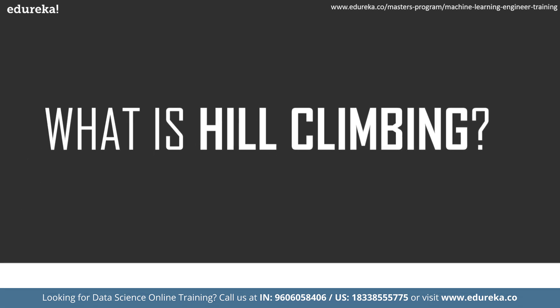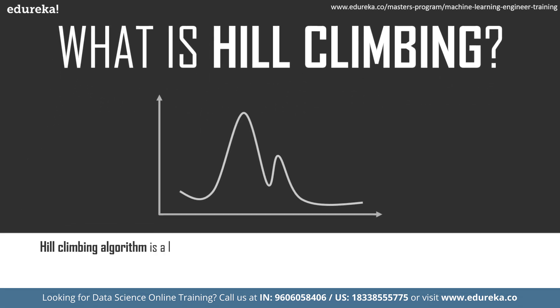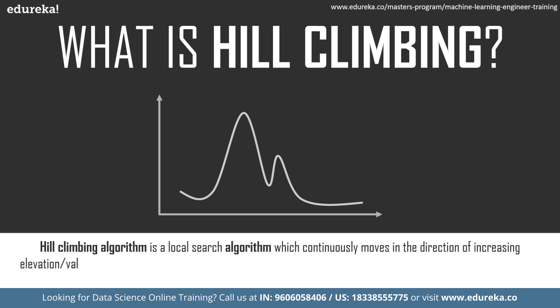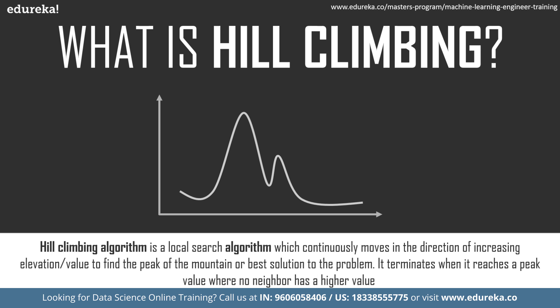Hill Climbing is a heuristic search used for mathematical optimization problems in the field of AI. Given a large set of inputs and a good heuristic — a self-learning function — it tries to find a sufficiently good solution. This may not be the global optimum, but it is the best possible solution in a reasonable period of time. A classic example is the traveling salesman problem, where you minimize the distance traveled.